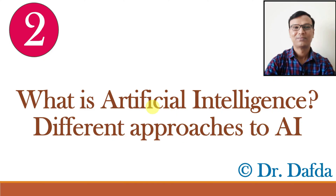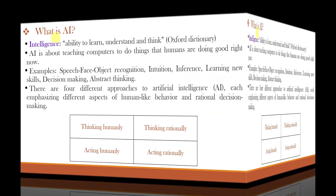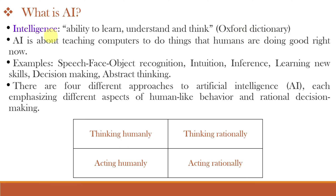Starting with the name, what is the meaning of artificial? Artificial means man-made and intelligence means thinking. So when the man-made machines think themselves and take decisions, it is called Artificial Intelligence. As per the Oxford Dictionary, intelligence means the ability to learn, understand and think. So when the machines can learn, understand and think by themselves, it is called Artificial Intelligence. Therefore, machine learning is a subset of Artificial Intelligence.